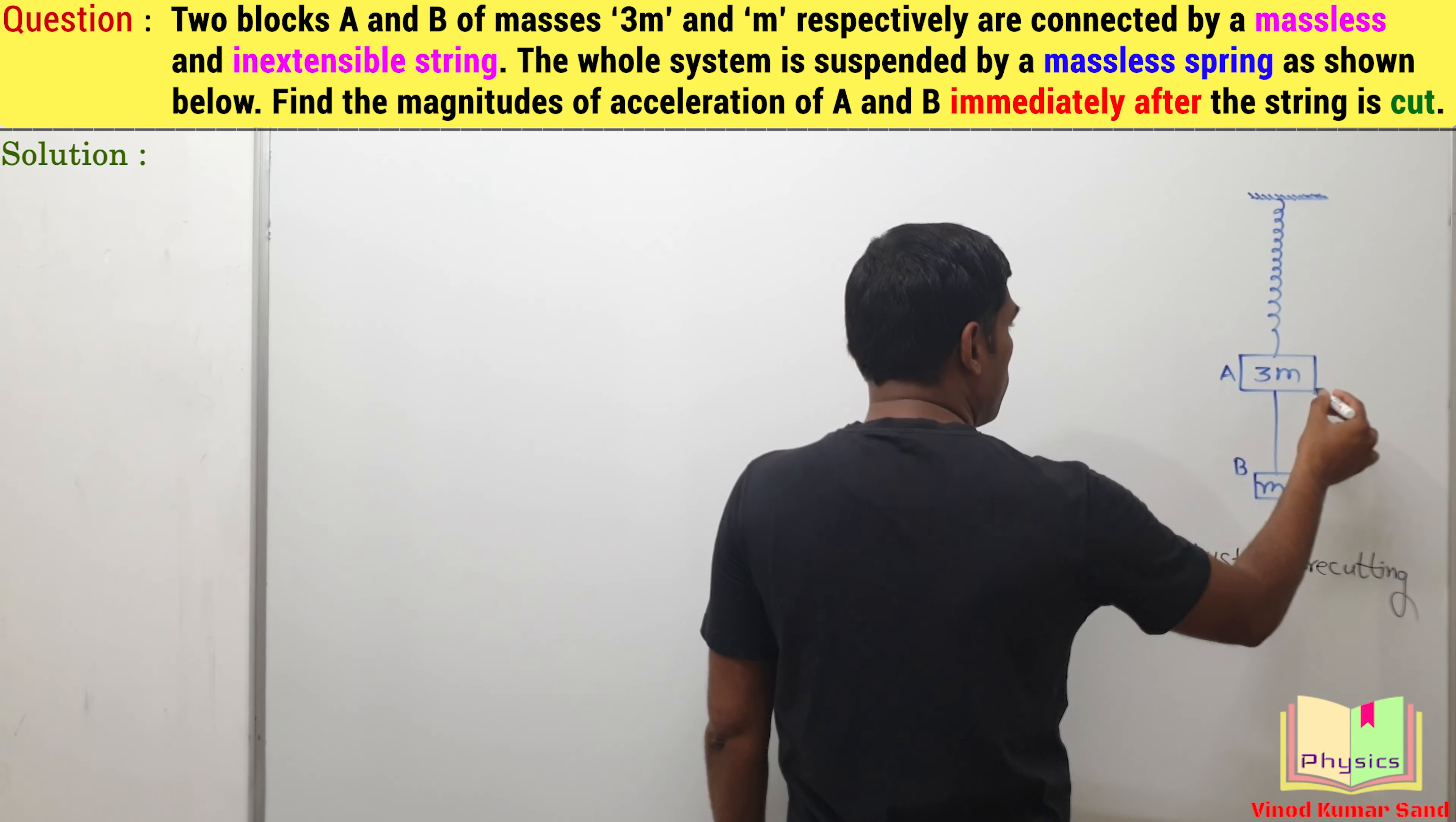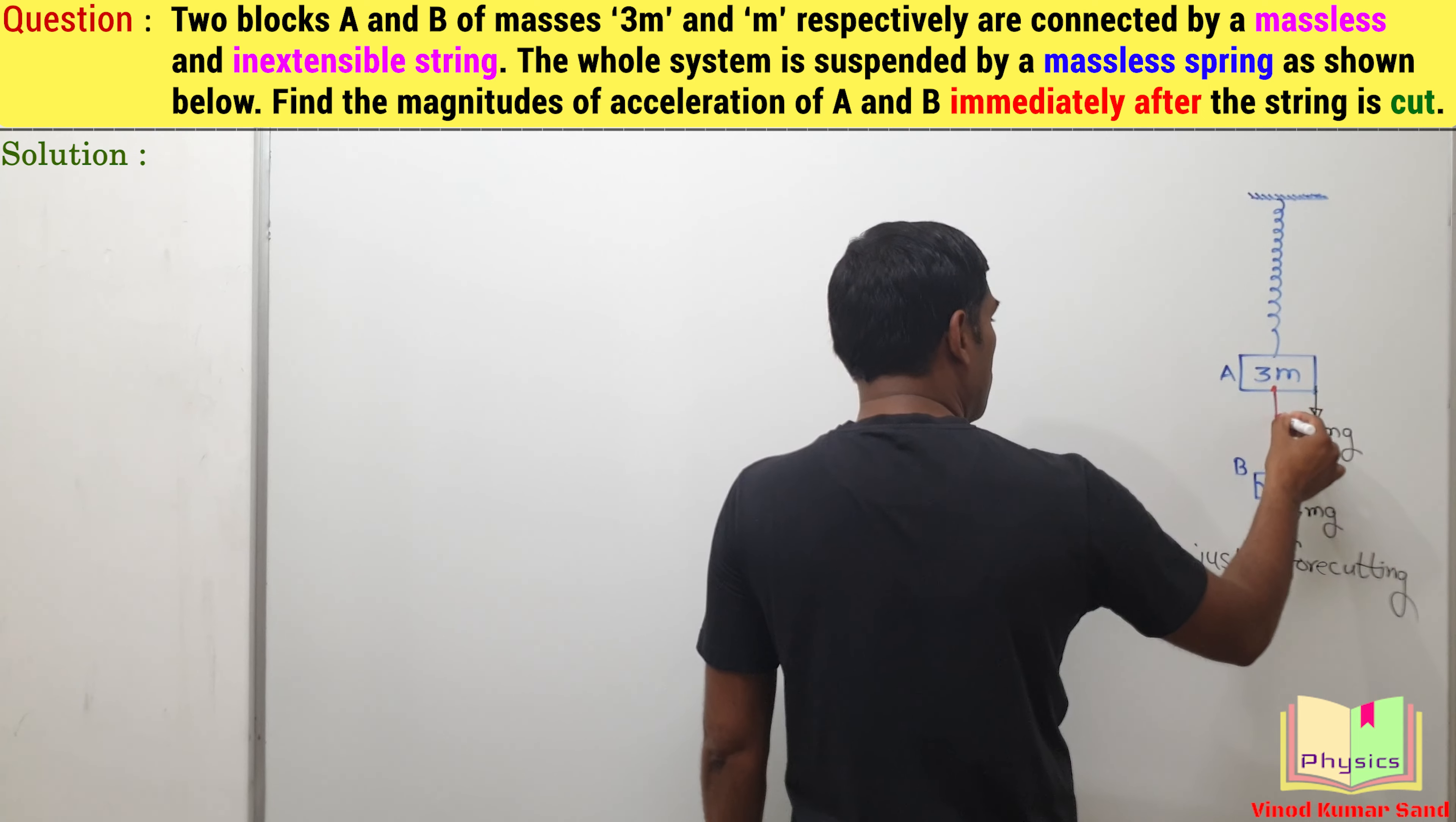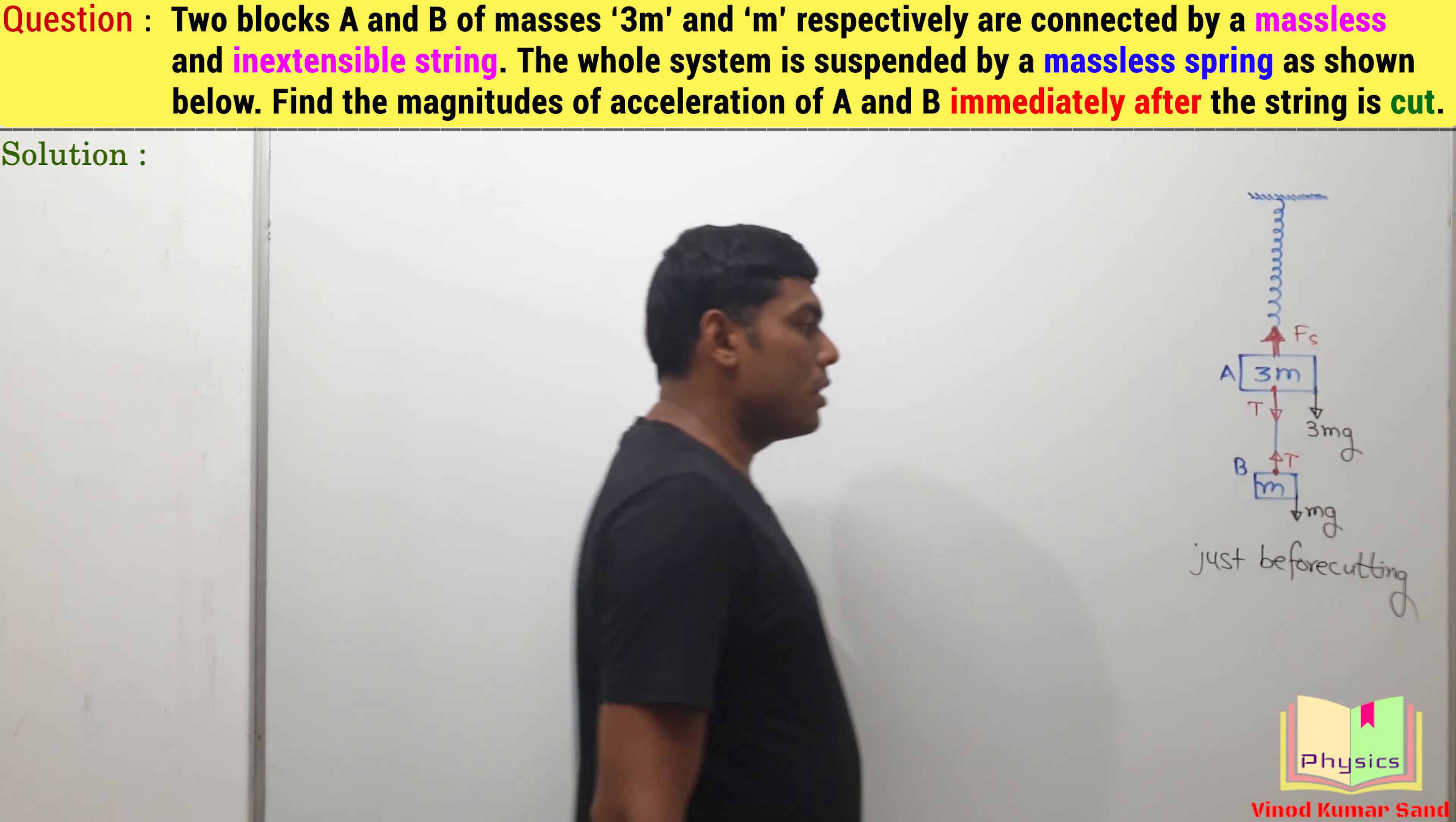The gravitational pull on this block is 3mg, the gravitational pull on this block is mg. The string has tension T, and since it is a light inextensible string, everywhere tension will be the same. Here is also tension T. The spring force we consider here as Fs.